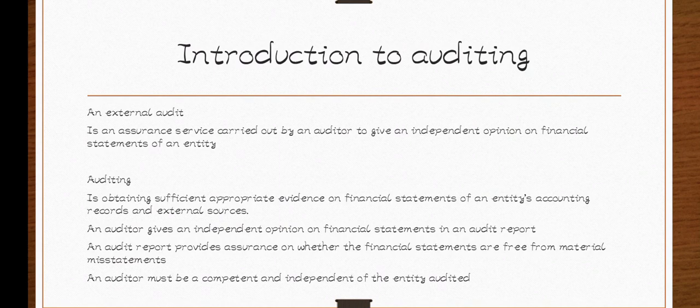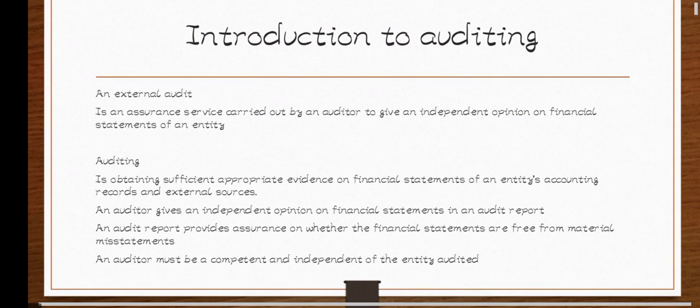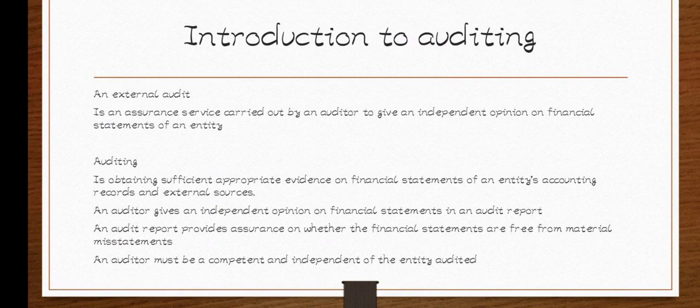After examining, the auditor will give their opinion to the people in the company. They will either tell them that the financial statements are free from material misstatements, or that the financial statements are not free from material misstatements. So they hire an auditor to give them assurance. That is the definition of an external audit: an assurance service carried out by an auditor to give an independent opinion on financial statements of an entity.